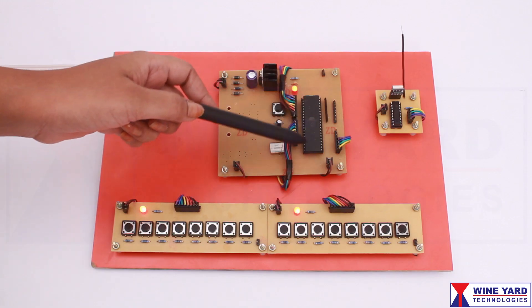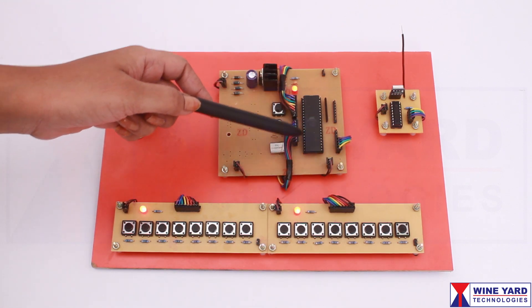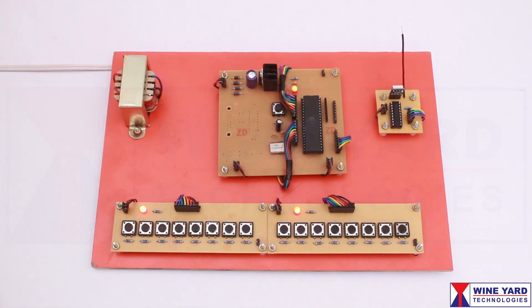The microcontroller reads the signal from the switch array and encodes the signal. This encoded signal is given to this 434 MHz RF transmitter unit.